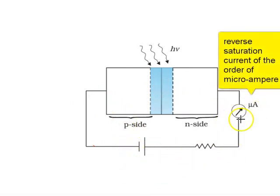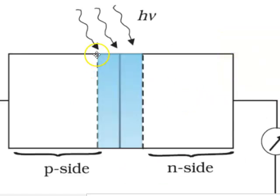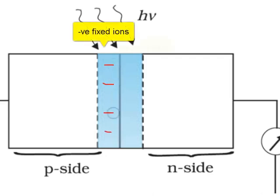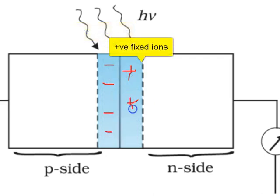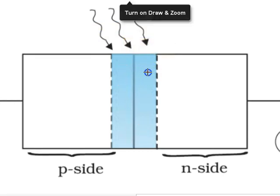This portion is called the depletion layer. This side has negative fixed ions and this side has positive fixed ions. The direction of electric field is in this direction from the N side to P side.